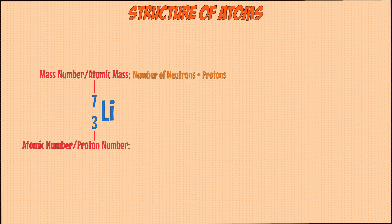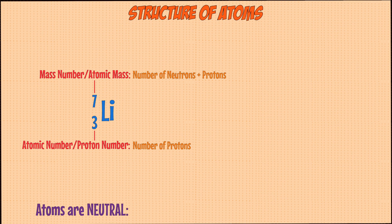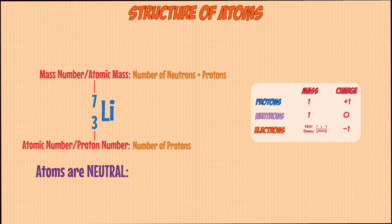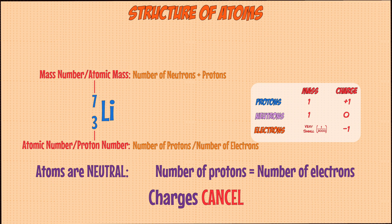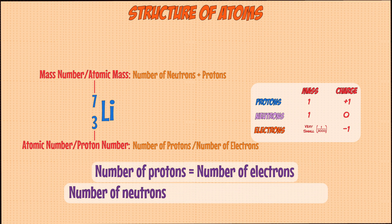The mass number tells you the number of neutrons plus protons in an atom of that element, and the atomic number tells you the number of protons. Atoms as a whole don't have an overall charge and are neutral. So as protons have a charge of plus 1 and electrons have a charge of minus 1, all atoms need to have the same number of protons and electrons for the charges to cancel out and make the atom neutral. This means the number of electrons is also equal to the atomic number. To find the number of neutrons in an atom, you subtract the atomic number from the mass number.